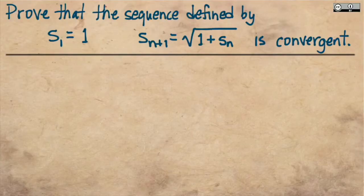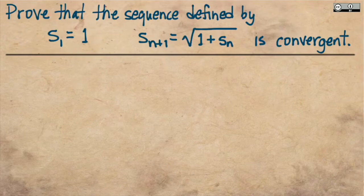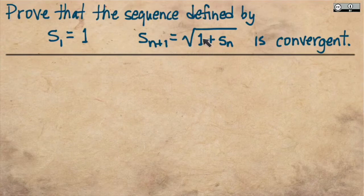Let's look at an example of how to prove in full that a certain sequence converges using the monotone convergence theorem. The sequence we're going to look at is defined recursively. We define it by first saying what its first term is — the first term is the number one — and then telling how to produce each successive term from the previous term. So every term is produced from the previous by adding one and then taking a square root.